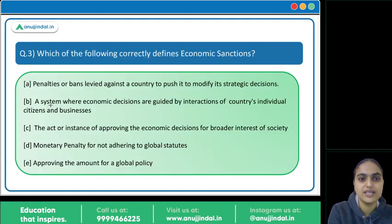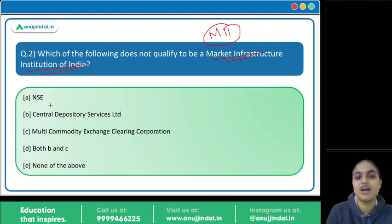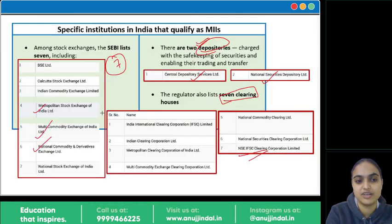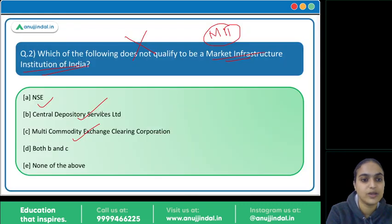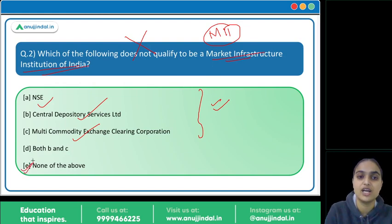That was all about MIIs. Coming back to the question, we need to identify which of these does not qualify to be an MII. NSE is there, Central Depository is there, Multi Commodity Exchange Clearing Corporation is there — we have discussed everything. The answer is option E: none of the above does not qualify.